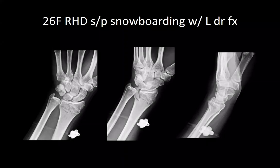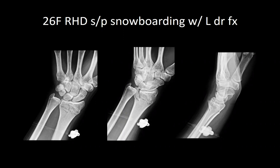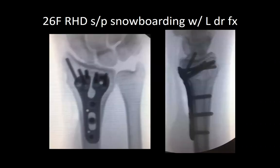Next we have a 26-year-old right-hand dominant female who fell while snowboarding and sustained a left distal radius fracture. This was her imaging at presentation. At the outside hospital, when she came to the office she was slightly more dorsally angulated and no reduction had been performed. We took her for a left distal radius ORIF.